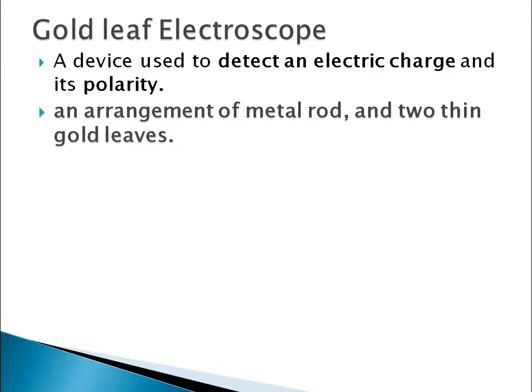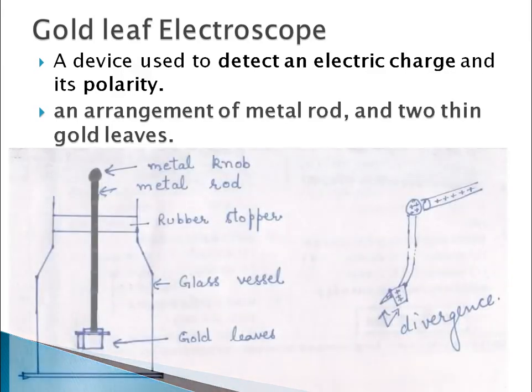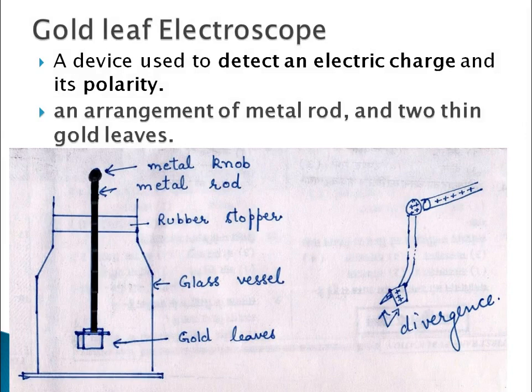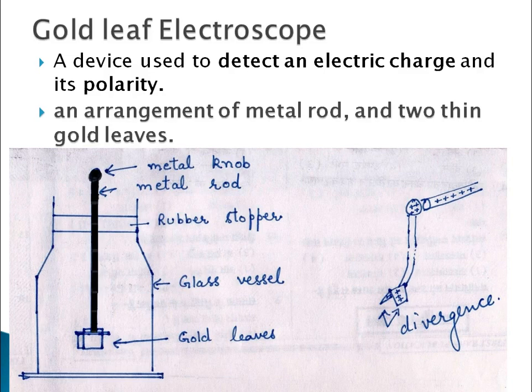This we can see in the diagram. In this diagram, there is a glass vessel in which we have fixed a metal rod with the help of a rubber stopper, and with the metal rod we have attached gold leaves.